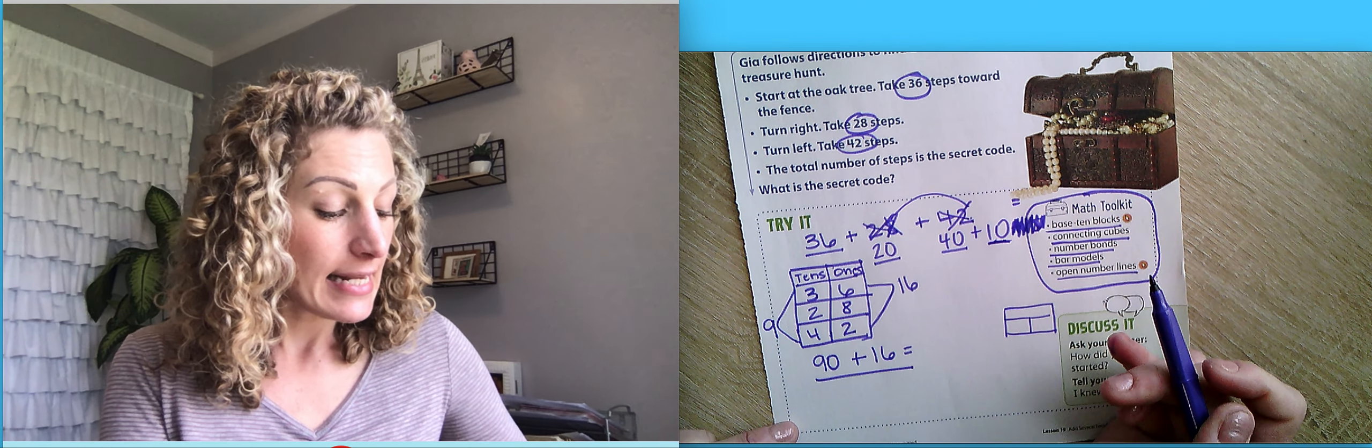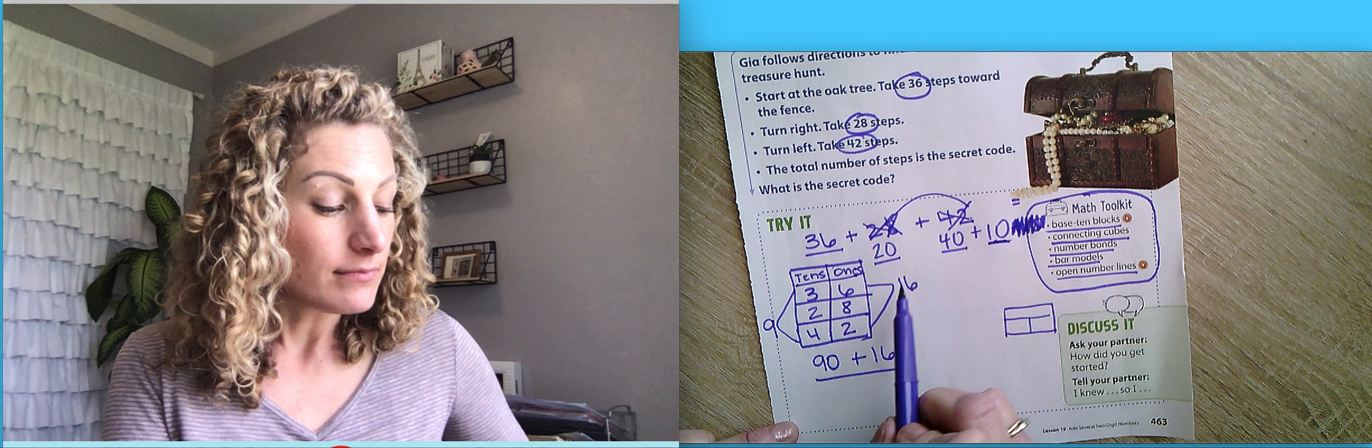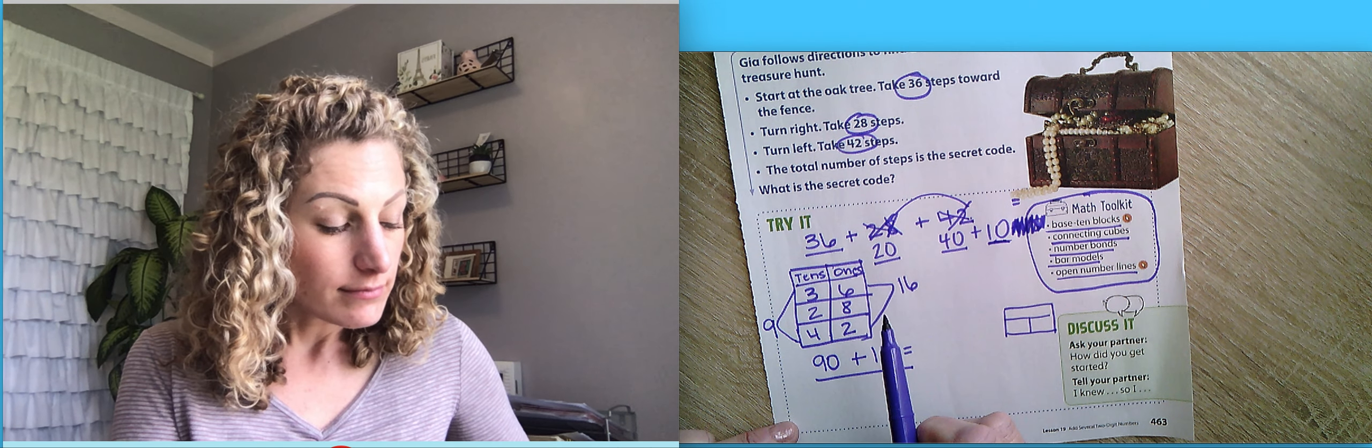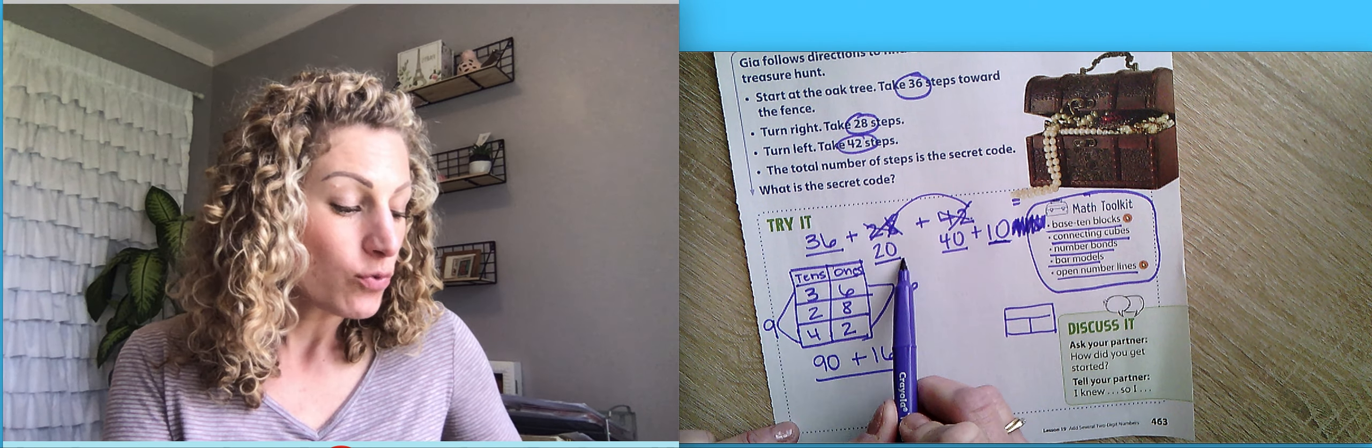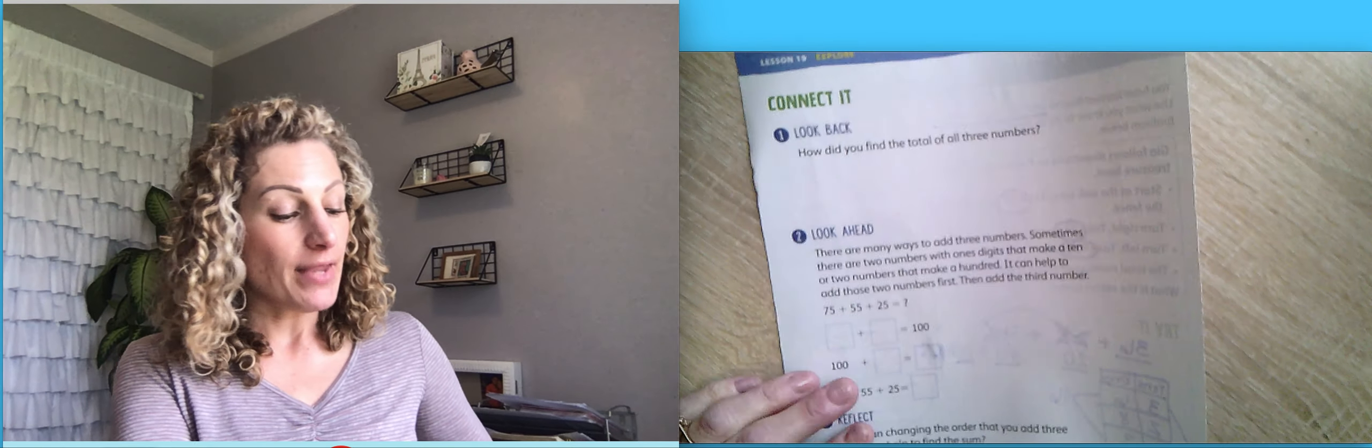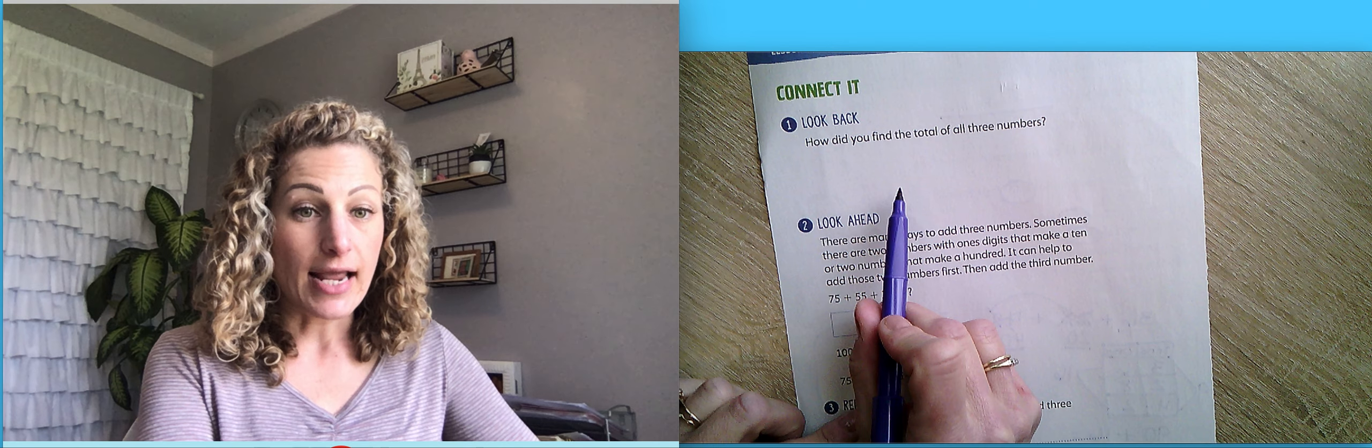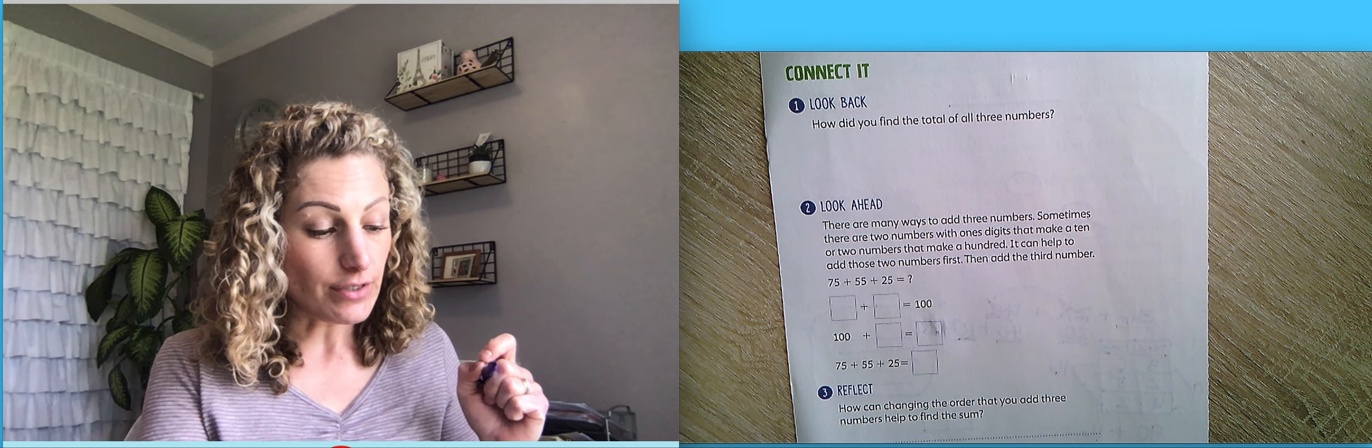So we have 90 and 16 or 36, 20, 40, and 10. They are both going to give you the same answer. On the back of your paper today, it's going to ask you that question. And how did you find it? What strategy did you use?